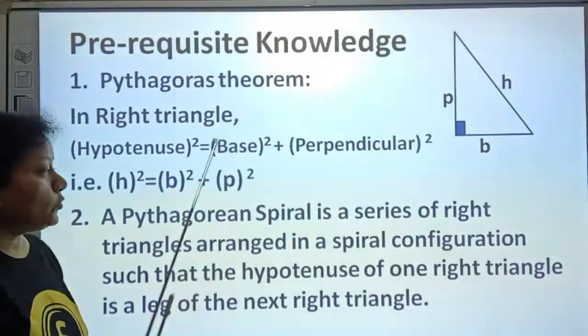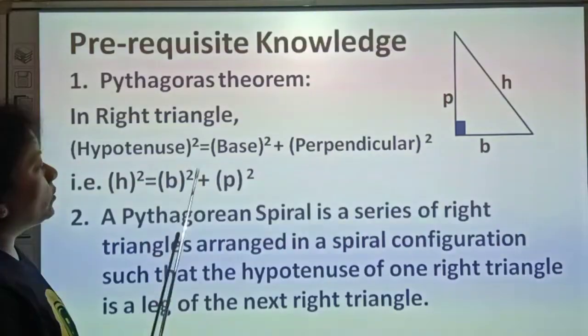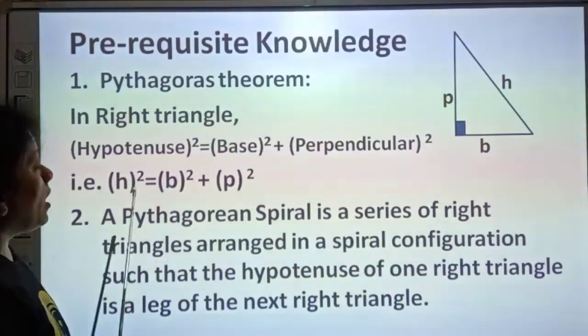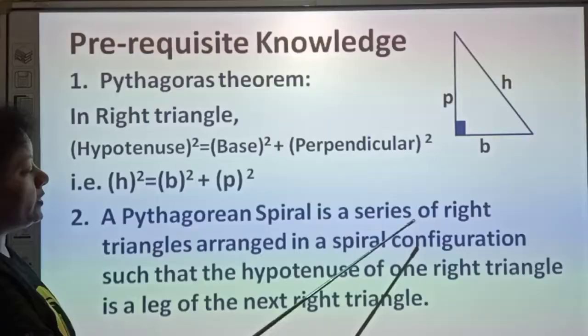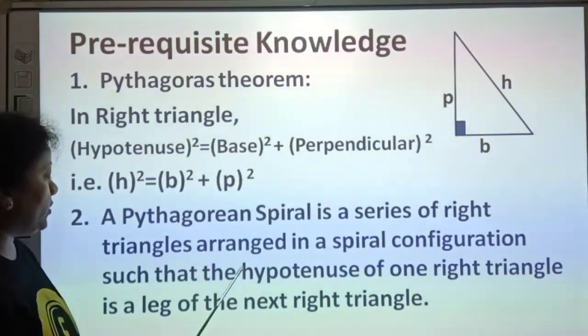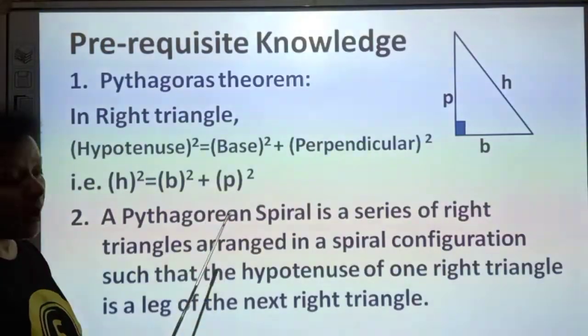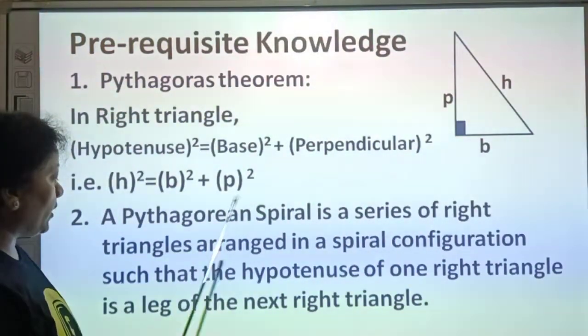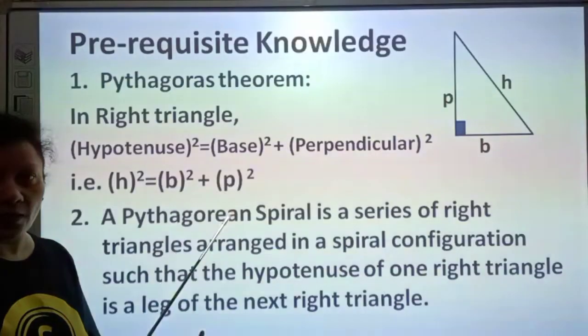Second, you should know the Pythagorean spiral. What is the meaning of this? A Pythagorean spiral is a series of right triangles arranged in a spiral configuration such that the hypotenuse of one right triangle is a leg of the next right triangle.